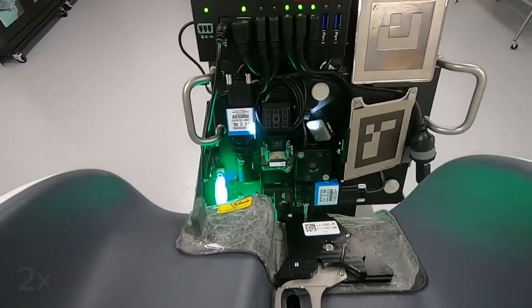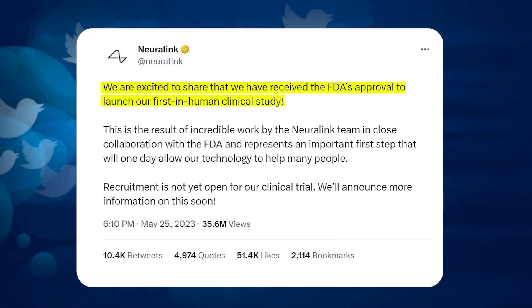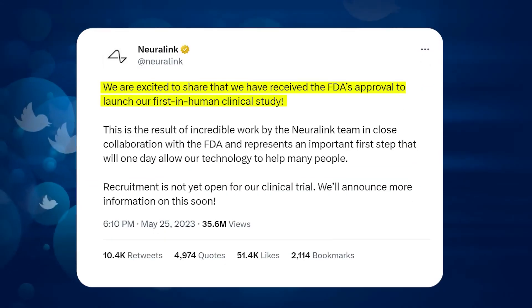Neuralink's goal goes beyond restoring human function. They aim to create a device that can enhance it. In a tweet, Neuralink expressed their desire to surpass the performance of non-disabled individuals using their technology. Elon Musk has also hinted that this technology could help address concerns about humans being replaced by artificial intelligence.